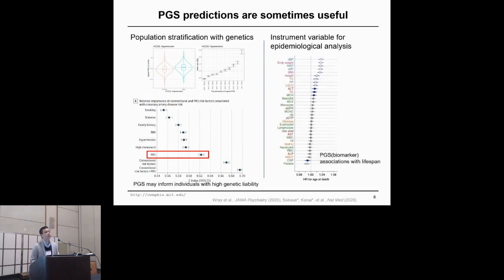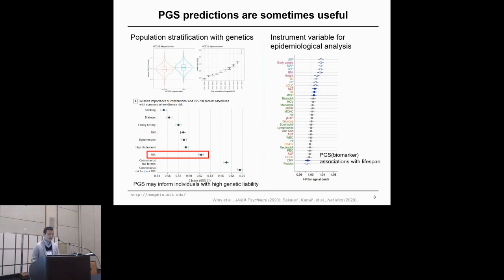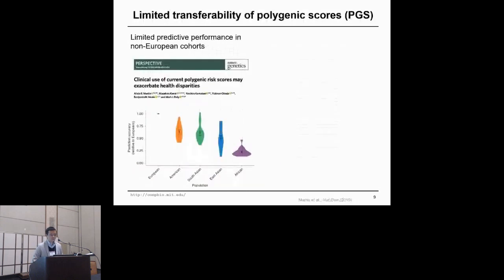In other cases, we can use polygenic score-predicted trait values as a kind of instrument variable for Mendelian randomization-style epidemiological analysis. In this particular example, the authors correlated predicted values of biomarkers to explore the association of those biomarkers with human lifespan, to understand what mechanisms or biomarkers influence human lifespan. In those scenarios, having a polygenic score is useful.